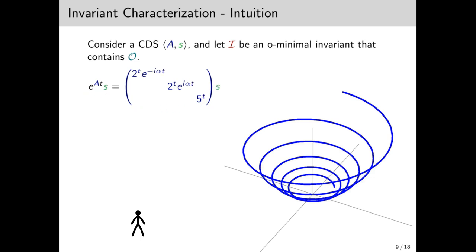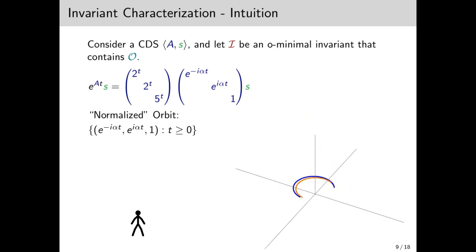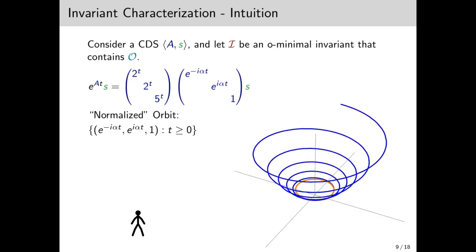Note that each eigenvalue has a modulus and a normalized value, which is a complex number on the unit circle. So e to the 8 T S looks like this. And we're going to split this into two matrices, one with the moduli, and one with the normalized values. Now let's focus on the normalized orbit, which is the trajectory if we ignore the moduli, starting from the initial point.